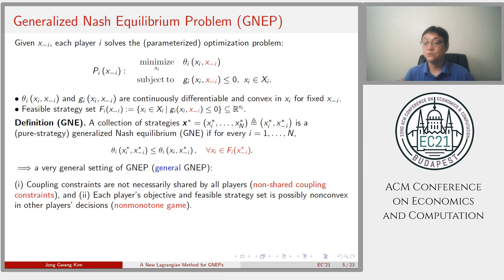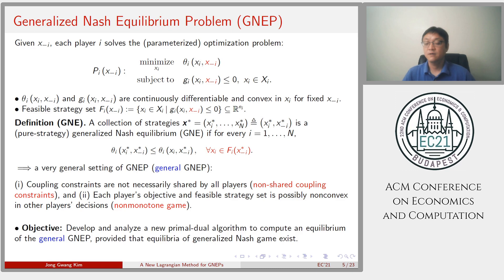The above formulation is a very general setting, so it is called a generalized GNEP. Because first, coupling constraints are not necessarily shared by all players. And each player's objective and feasible strategy set is possibly non-convex in other players' decisions.